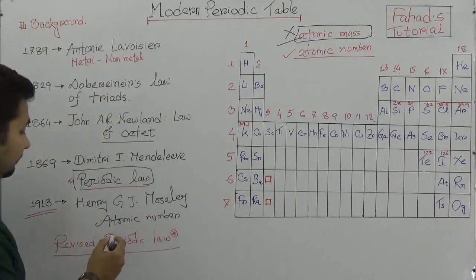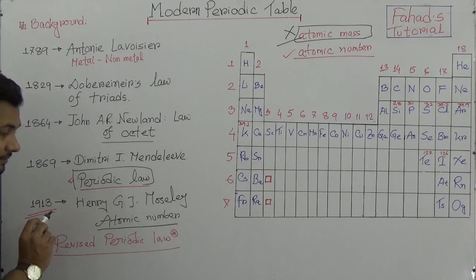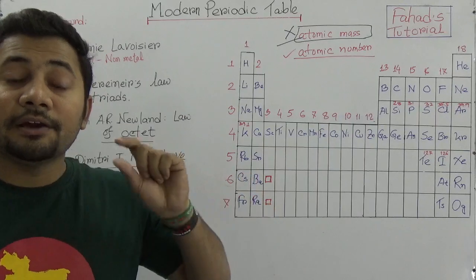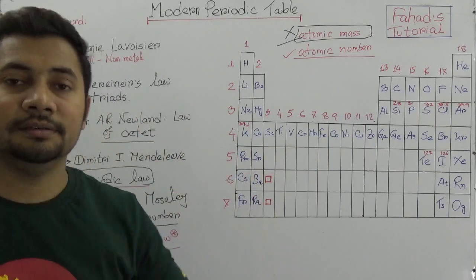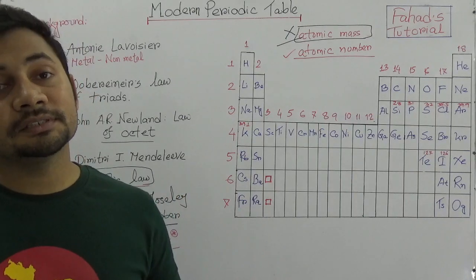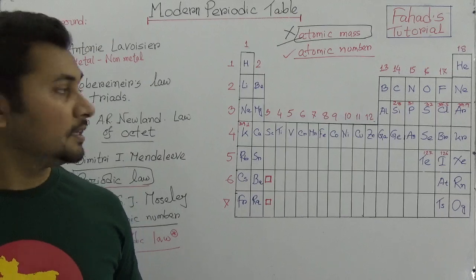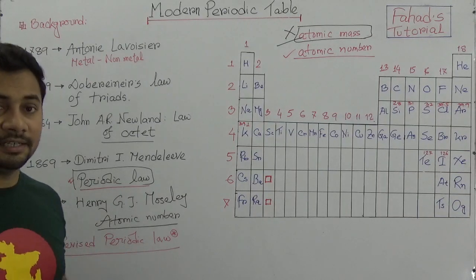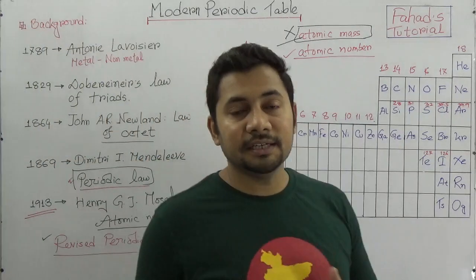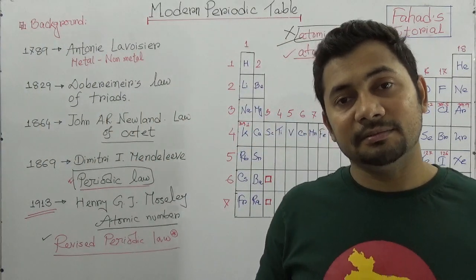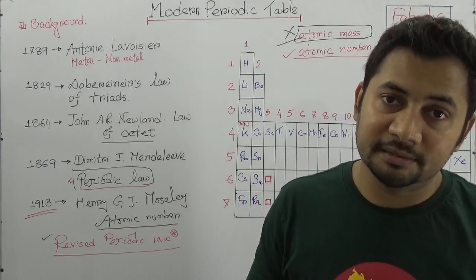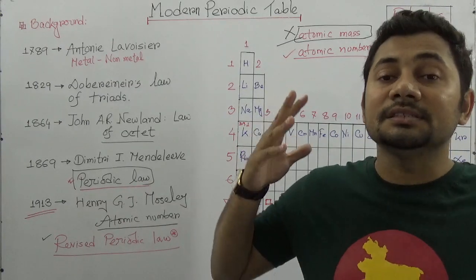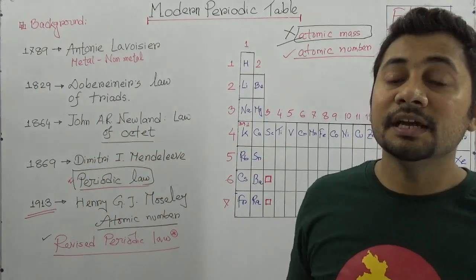After the invention of the atomic number, the revised periodic law was established: if all elements are arranged according to their atomic number, the physical and chemical properties of the elements will repeat periodically. That is the modern periodic table and the modern revised periodic law. In this tutorial, I tried to make you understand why the periodic table is important and what its history is. It was not a one-day invention and not a single scientist's contribution — it was a series of days and a series of scientists' contributions.